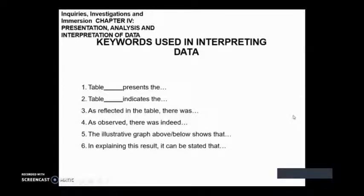The keywords in interpreting data are as follows. For example, table blank presents the, another is table blank indicates the. It also could be, as reflected in the table there was blank. As observed there was indeed. The illustrative graph above or below shows that. And it also can be, in explaining this result, it can be stated that. These are the keywords we use in interpreting data.